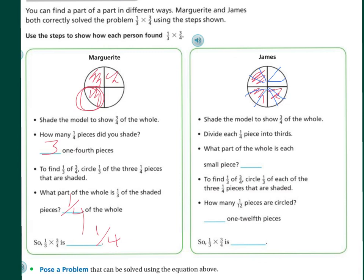Now, what part of the whole is each small piece? This little small piece is one-twelfths. To find one-third of three-quarters, circle one-third of each piece of the one-fourth shaded. How many one-twelfth pieces are circled? I'm going to have one, two, three, because one in this one, two in this one, and three in this one, because those were the shaded areas. So, then that means I'm going to have three of the one-twelfth pieces.